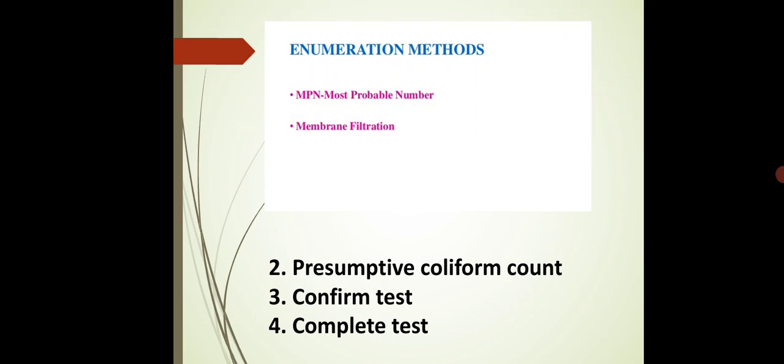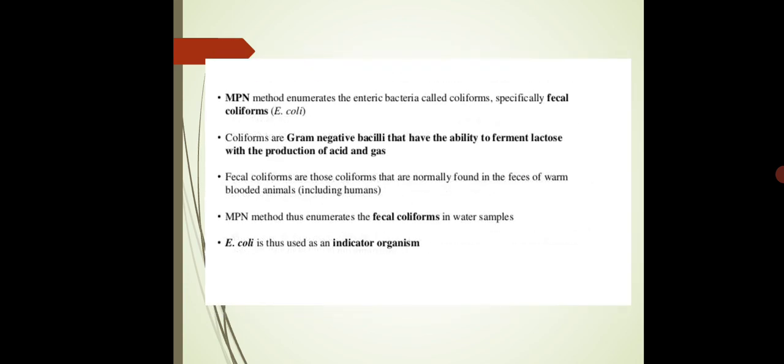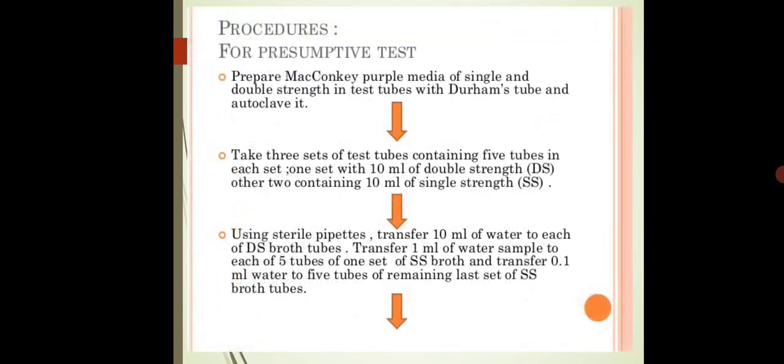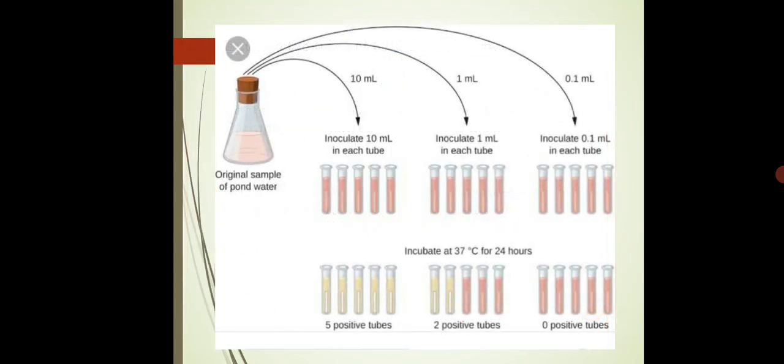Hello dear students, we have started with our enumeration methods. In the previous lecture we have already discussed about the presumptive test. The presumptive test comes under the main heading known as MPN, that is Most Probable Number. This method is used to check the portability of water and MPN consists of three steps: presumptive test, confirmed test, and complete test. We have already discussed the introduction, principle, protocol, and results for the presumptive test.